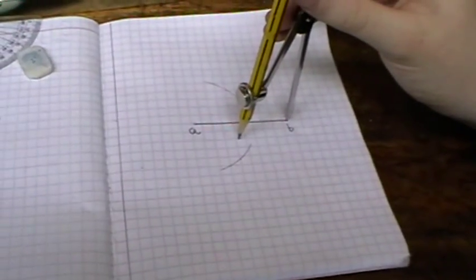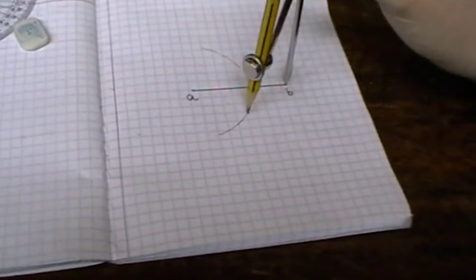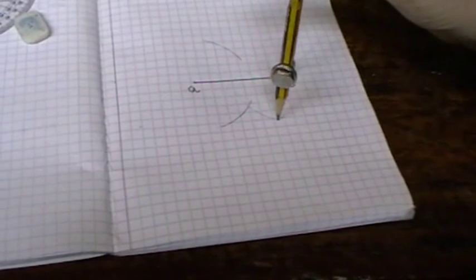Place the point of the compass at B, draw an arc above and below cutting the first two arcs.